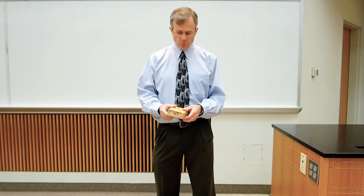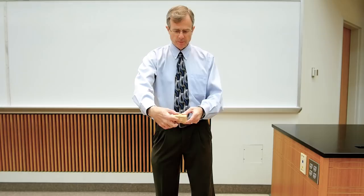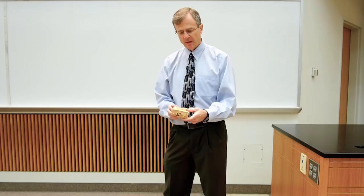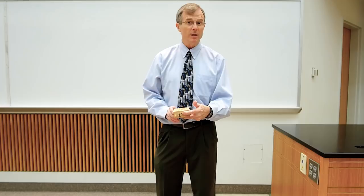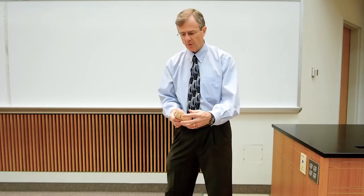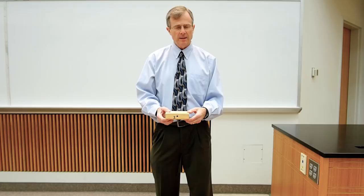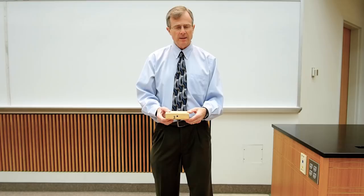Every solid, rigid body has three principal axes of rotation. For this block of wood, the axis of rotation that passes through these two points — meaning it rotates this way — is the axis with the smallest moment of inertia. The one passing through these two points, labeled two, has the intermediate moment of inertia, and the one passing through this face on both sides has the largest moment of inertia.